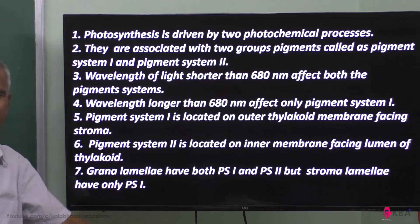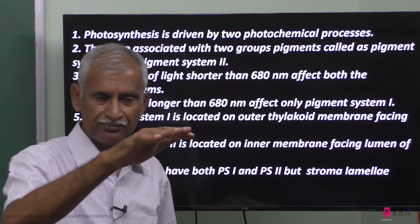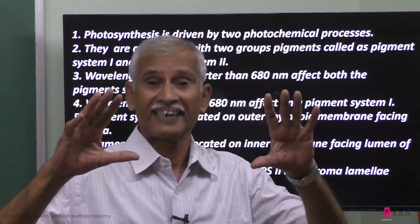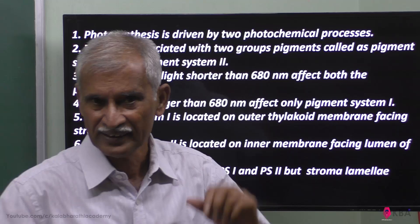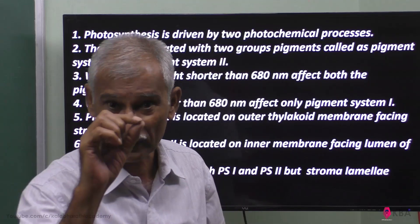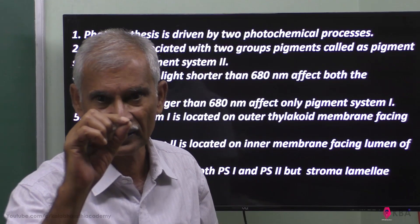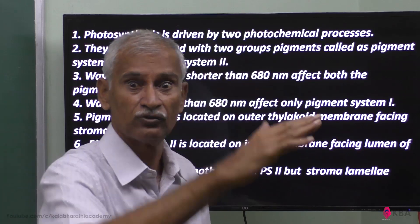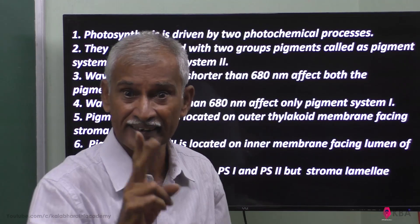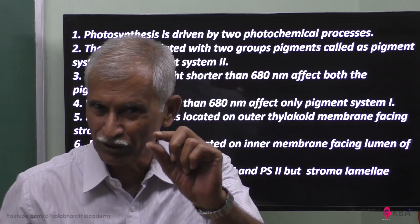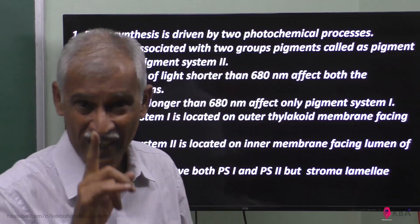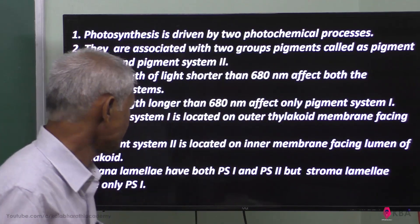Regarding pigment system one - light has got a dual character, a double character. One is it exists as a particle - photon, corpuscle. And it moves as a wave. So it has got two natures: solid particles and waves. And the wave nature...